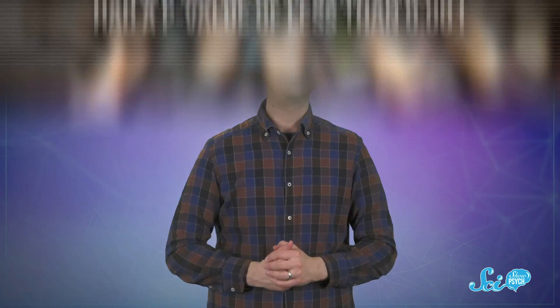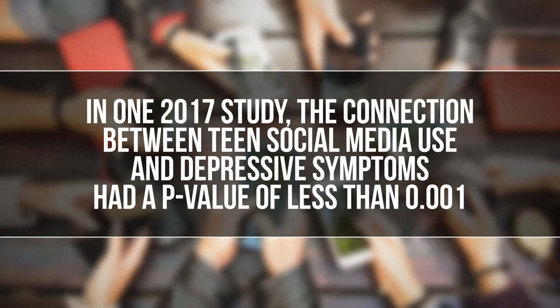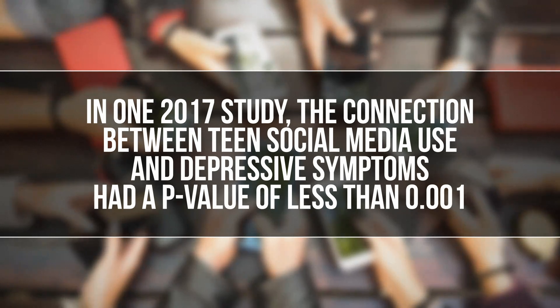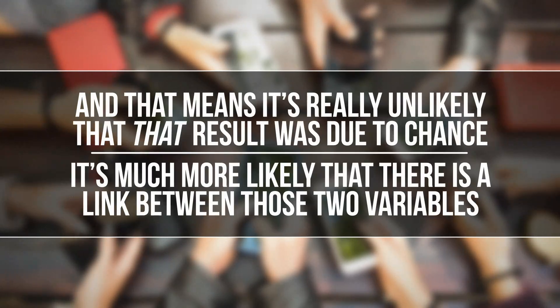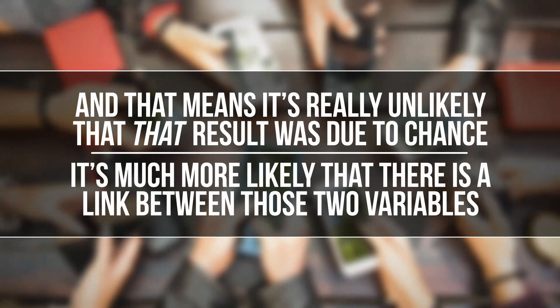The connections between things like teen phone or social media use and depressive symptoms are significant. For example, in one 2017 study, the connection between teen social media use and depressive symptoms had a p-value of less than 0.001. That means it's really unlikely that result was due to chance — it's much more likely that there is a link between those two variables. That's what statistically significant means.